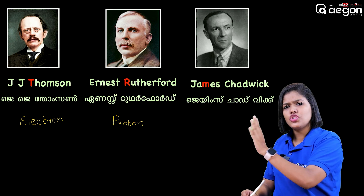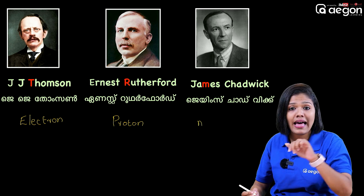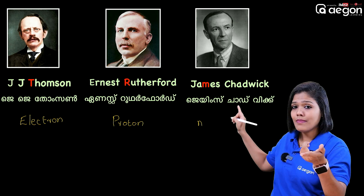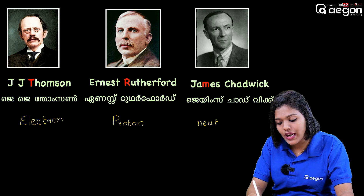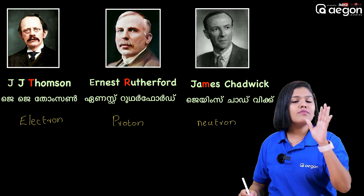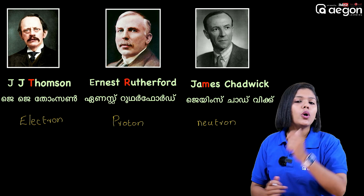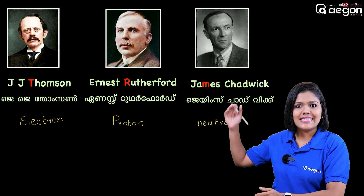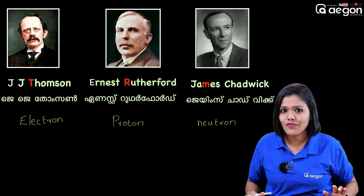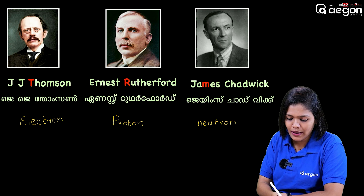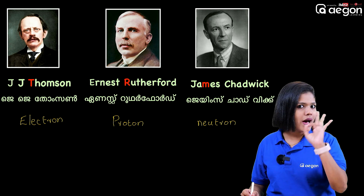We call it James Chadwick — for neutron. James Chadwick. It's in the previous question papers. J.J. Thompson — electron. Proton — you call it the neutron discovered by James Chadwick. This is the third question: how many shells and electrons are there?